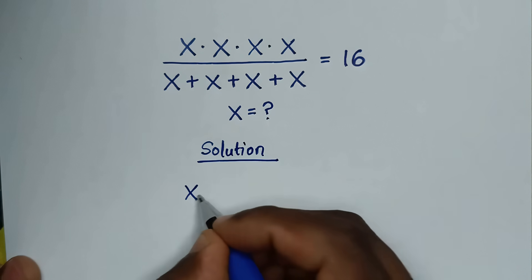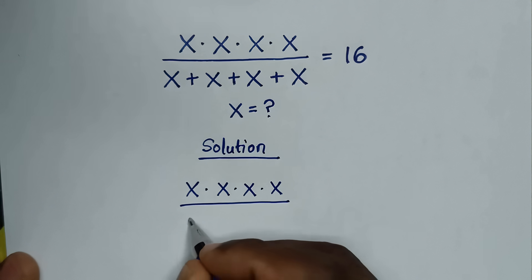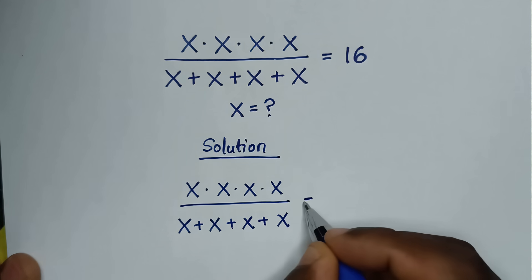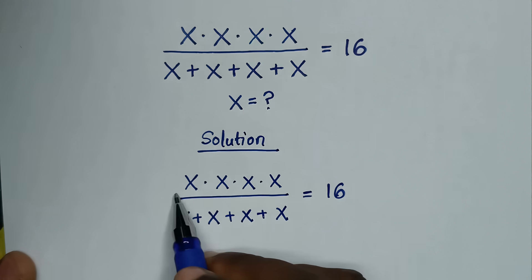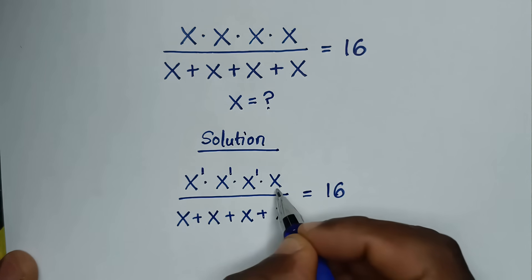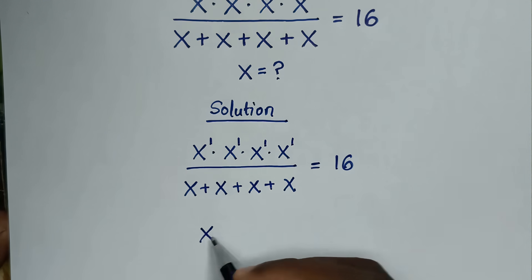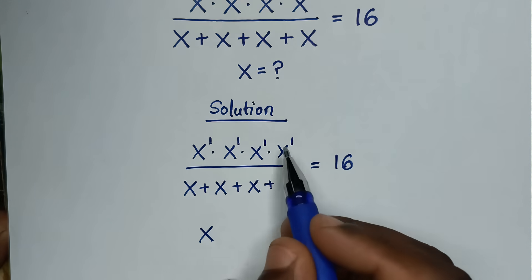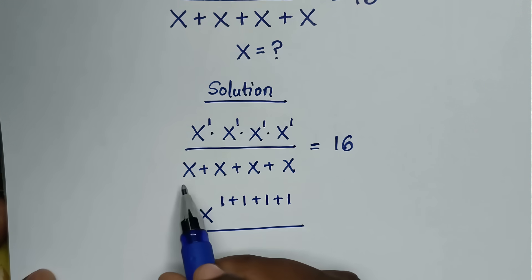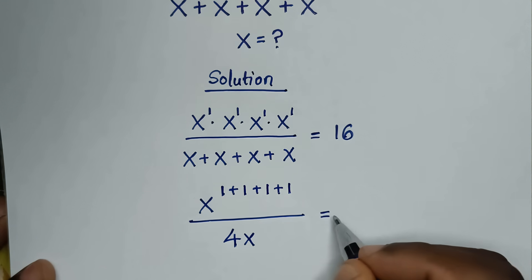From our problem, x times x times x times x over x plus x plus x plus x is equal to 16. This multiplication is the same as x power of 1 times x power of 1 times x power of 1 times x power of 1. So here we add the powers: 1 plus 1 plus 1 plus 1. In the denominator, x plus x plus x plus x is 4x, so this equals 16.